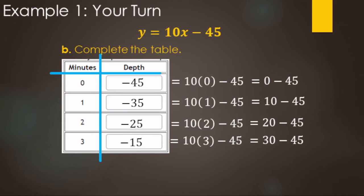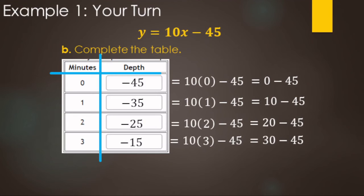If you're using the story directly: at zero minutes you start at negative 45. Since you ascend 10 feet per minute, you can just add 10 each time — negative 45, negative 35, negative 25, negative 15 — assuming the table goes up by one minute.